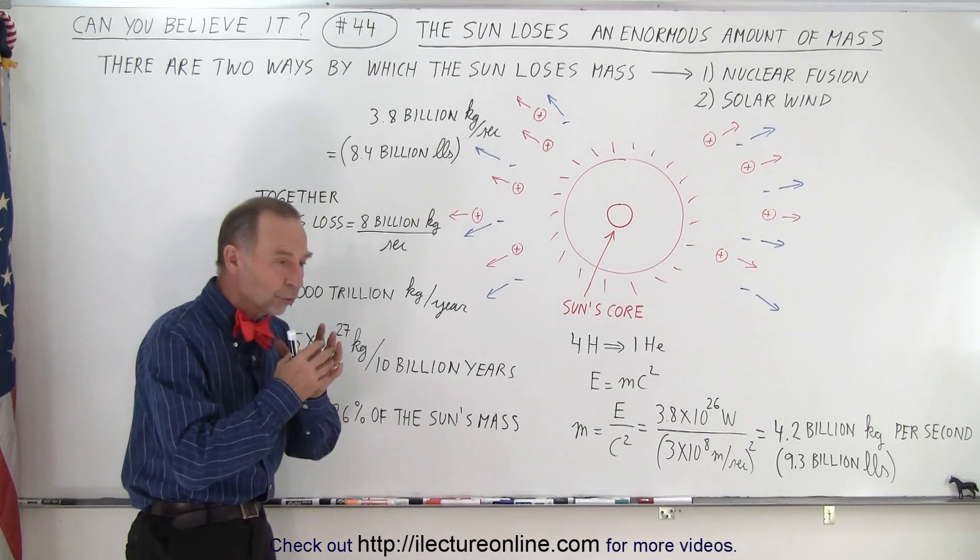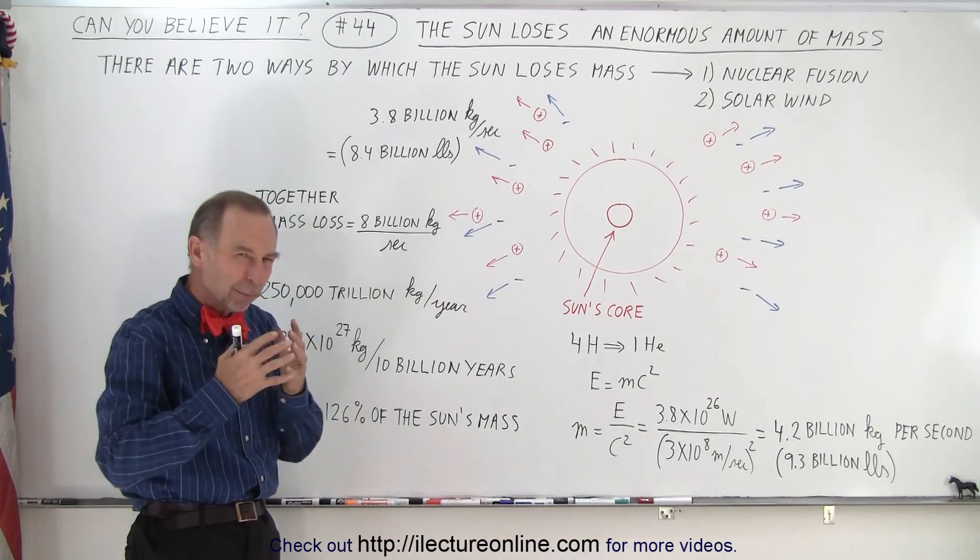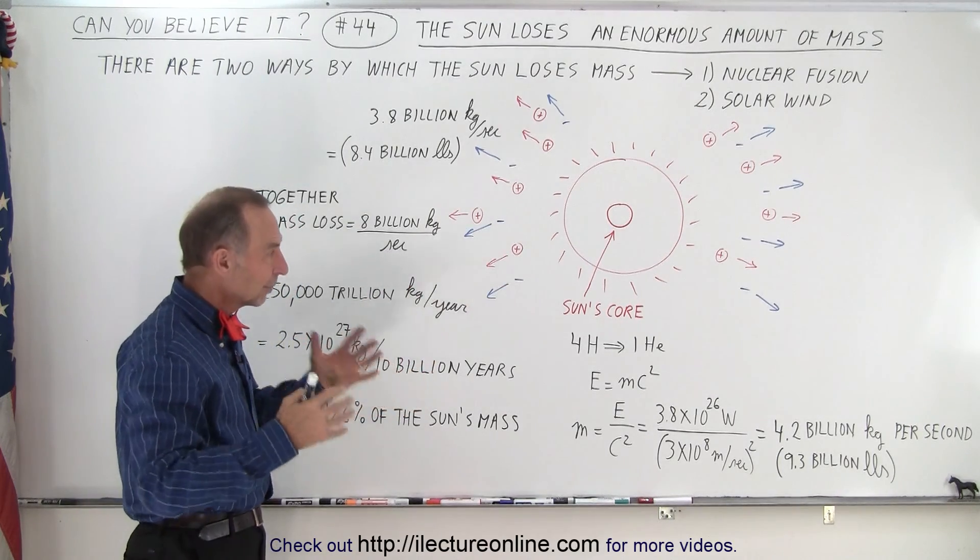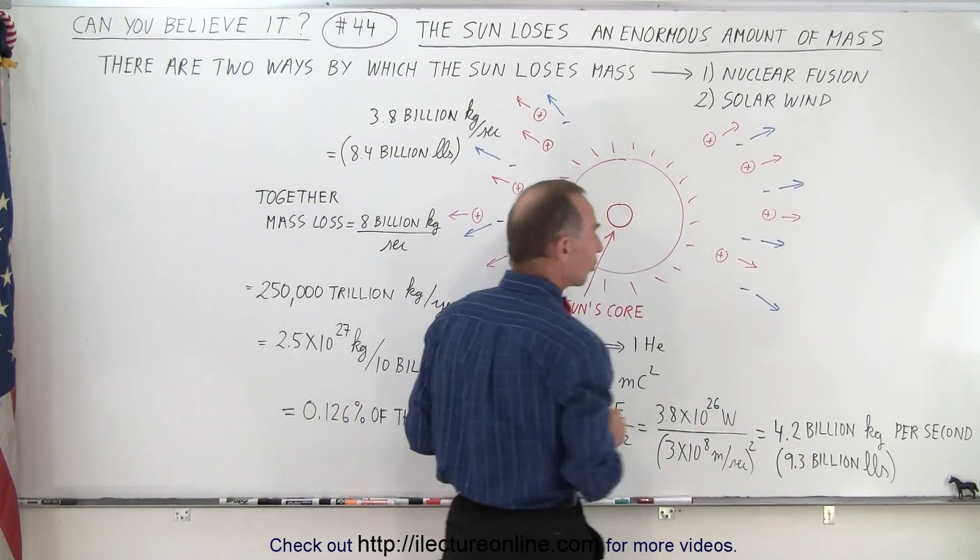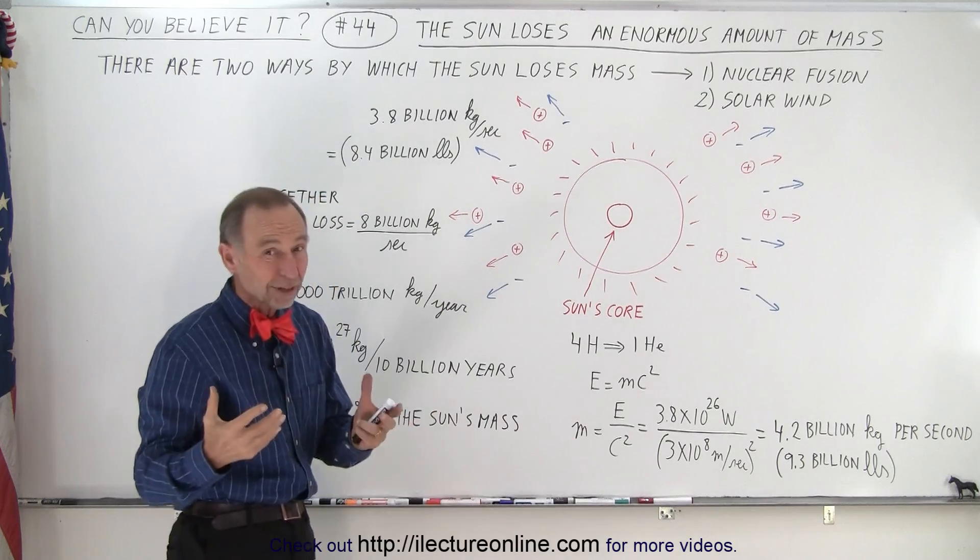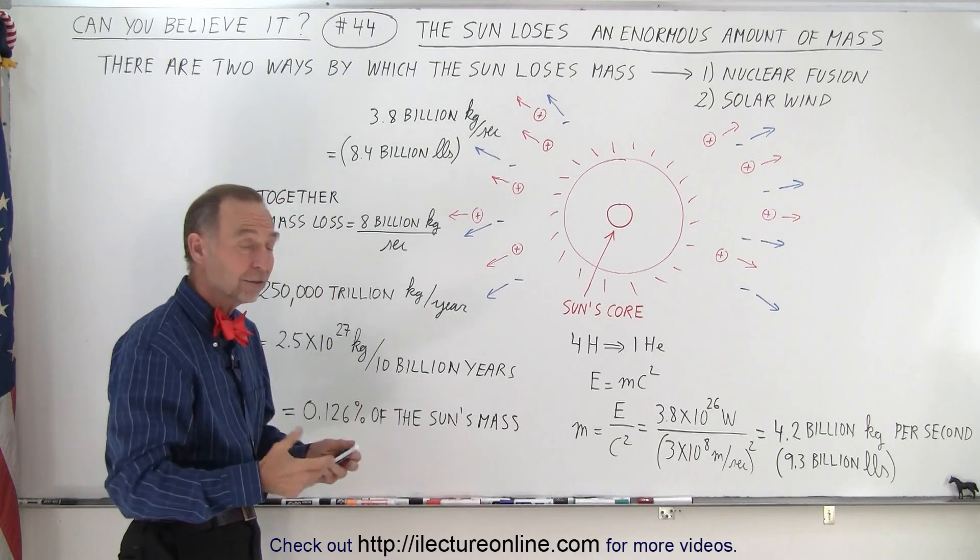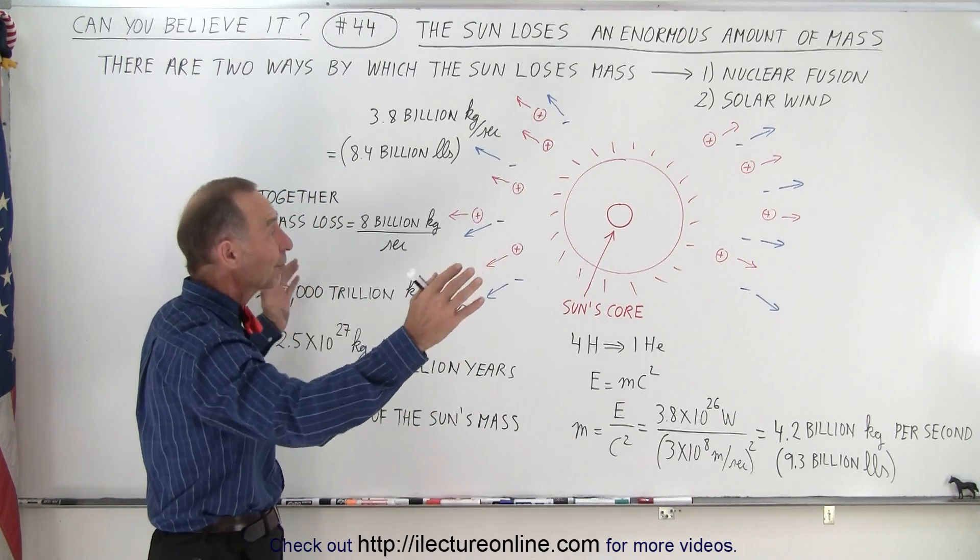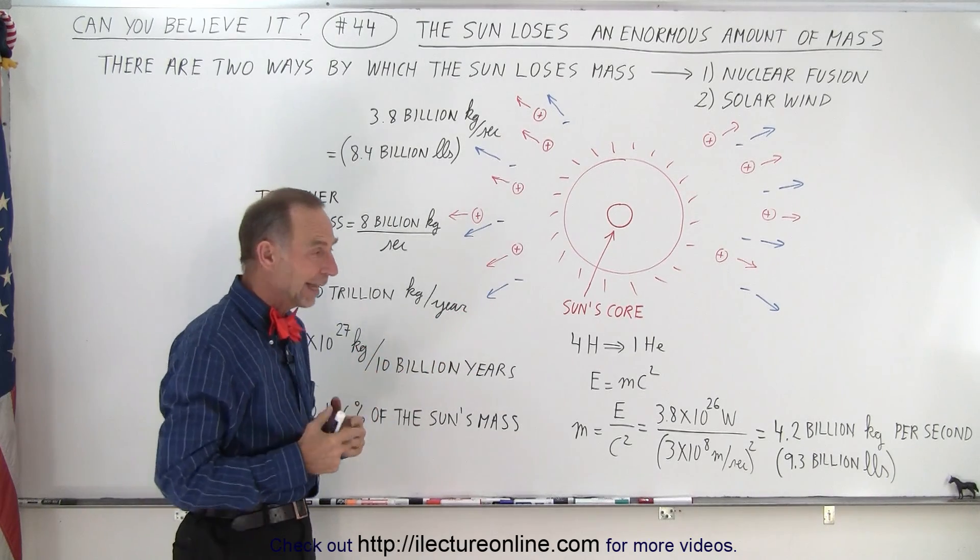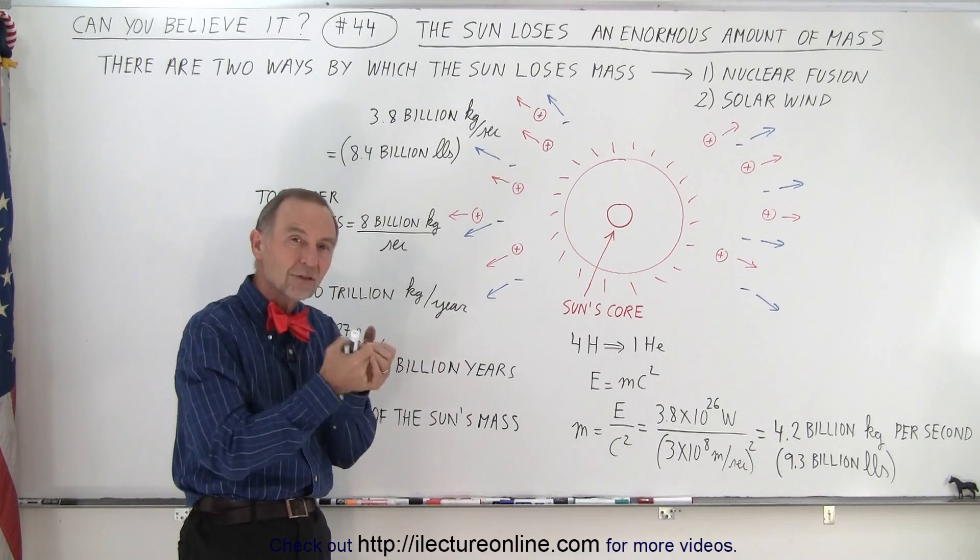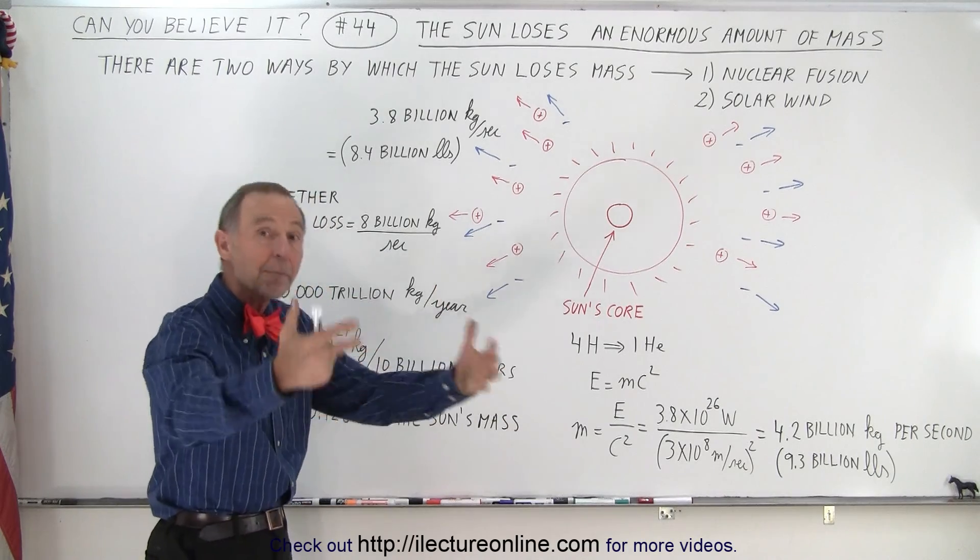At the same time, the sun also pushes out, in a little bit more gentle fashion, small particles, positively charged particles, negatively charged particles, typically protons and electrons, but some other ions as well, and pushes them away from the earth at thousands of miles per second. That's very fast, and the gravitational pull of the sun is not sufficient to stop them and bring them back.